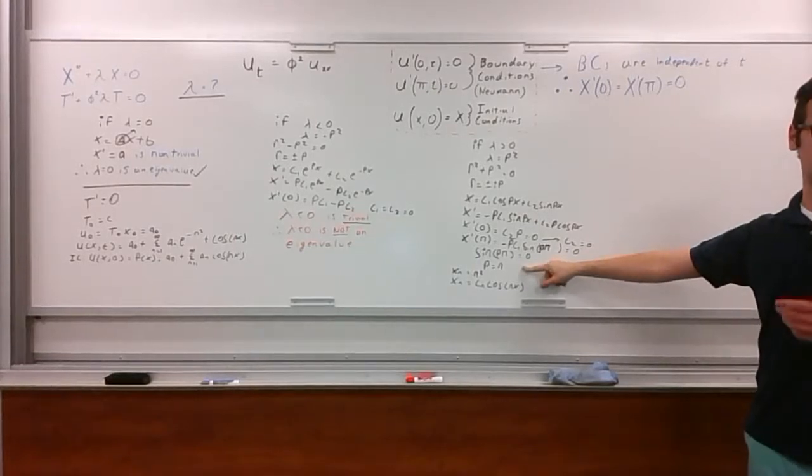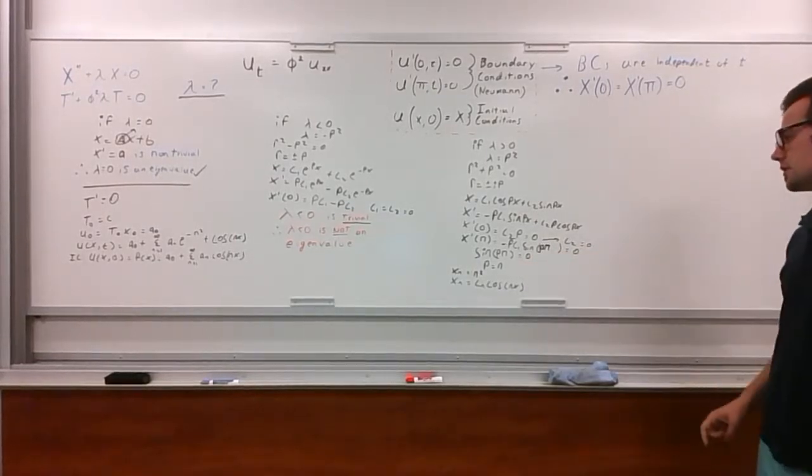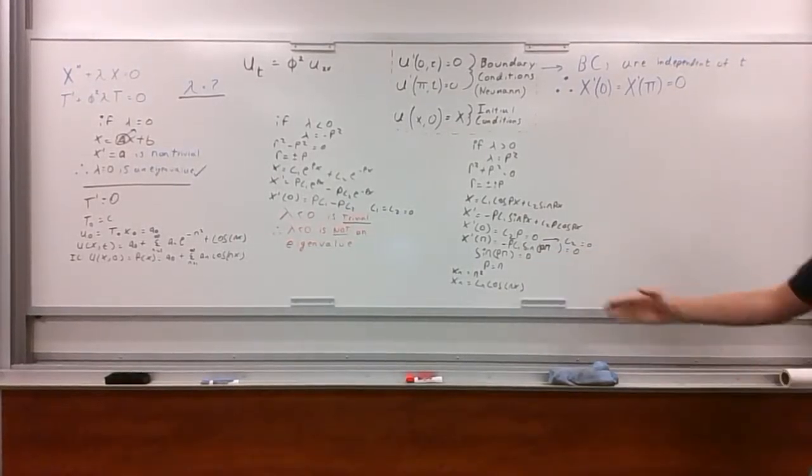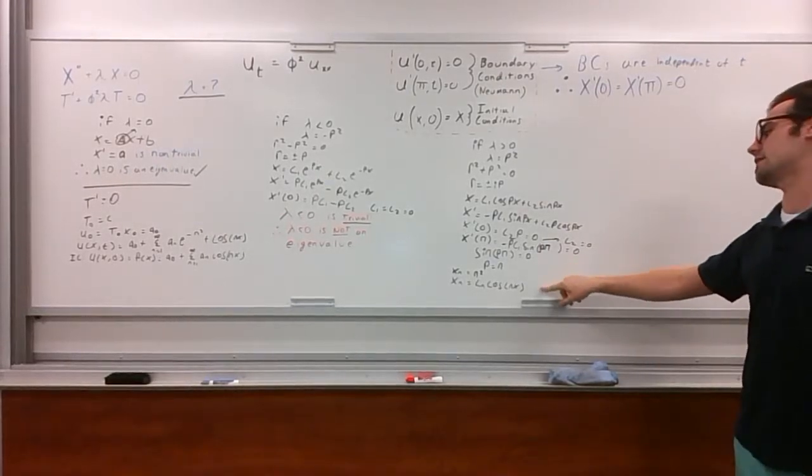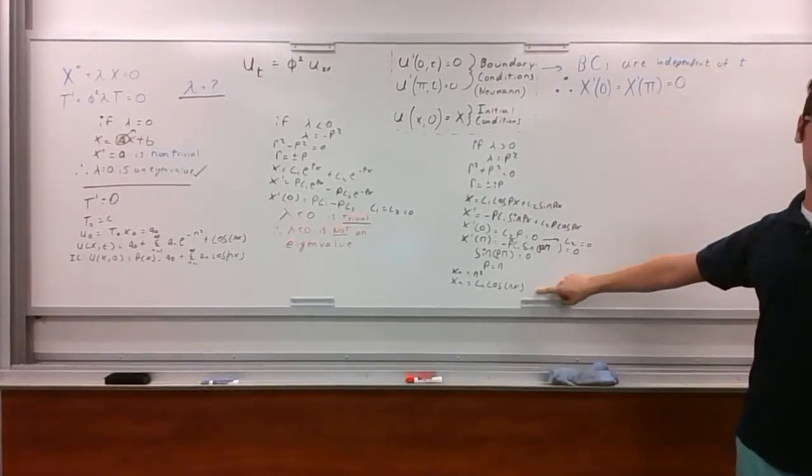Therefore, p equals n, where n is any integer. Therefore, we get that lambda n equals n squared, and substituting, we get xn equals cn cos nx.